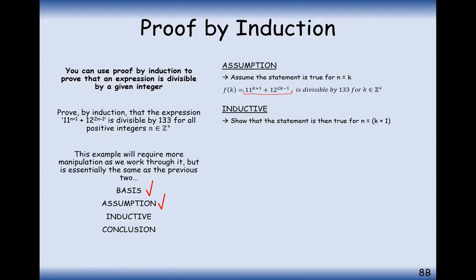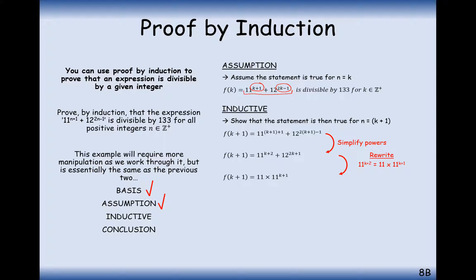Now prove the theorem works for n equals k+1. Start with f(k+1): 11 to the power of (k+1)+1 plus 12 to the power of 2(k+1) minus 1. Simplify the powers. We want to turn these back into the powers from the assumption step, so take 1 power out of 11 to the power of k+2 and 2 powers out of 12 to the power of 2k+1 — since there is a 2-power difference between 2k+1 and 2k minus 1. Rewrite both powers accordingly, taking 1 power of 11 out and 2 powers of 12 out. Evaluate 12 squared as 144.